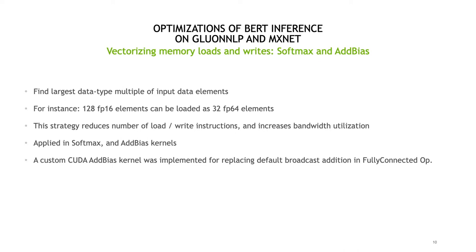In the case of softmax and bias addition, we implemented two CUDA kernels. One of the strategies we followed for having an optimal kernel was to vectorize the memory loads and writes. Because we are performing inference in FP16, instead of loading independently each FP16 element, we can put together several of these elements and load them together. For instance, if we have 128 FP16 elements, we can load them with 32 loads, loading them as FP16 elements. This allows us to reduce the number of load and write instructions and increase the bandwidth utilization.